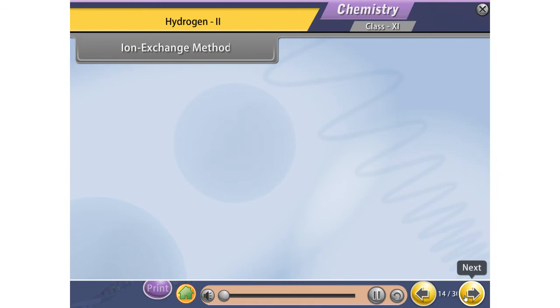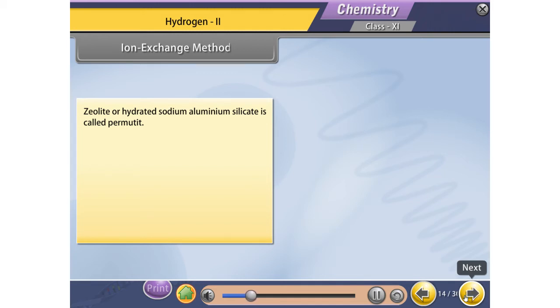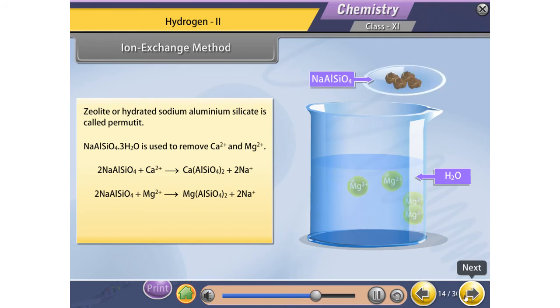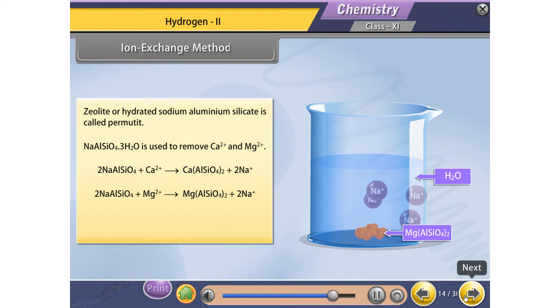Ion exchange method: Zeolite or hydrated sodium aluminium silicate is called permutit. NaAlSiO4·3H2O is used to remove Ca2+ and Mg2+. The zeolite can be regenerated by treatment with NaCl solution.